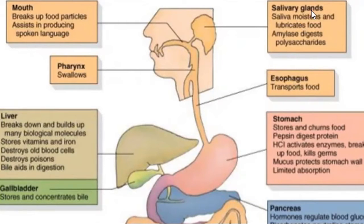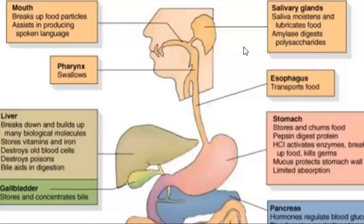If you talk about the salivary gland — the salivary gland produces moisture, number one. Number two, it produces an enzyme called amylase. Amylase is very important in digesting food starch into maltose; it converts starch into maltose.